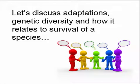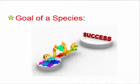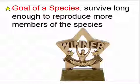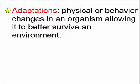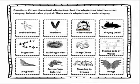Let's talk about adaptations and how genetic diversity relates to survival of the species. The goal of a species — not a conscious goal — is for individuals to survive long enough to reproduce, otherwise the species will go extinct. Adaptations are physical or behavioral changes in an organism that help it survive better in an environment. With genetic diversity, certain adaptations will help individual members survive better in a changing environment and pass on those traits to offspring.